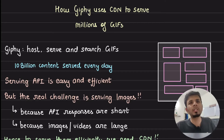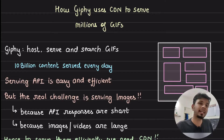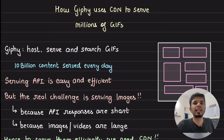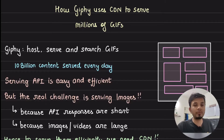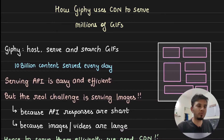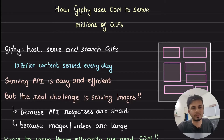Giphy is the world's most popular GIF website and it serves 10 billion media content every single day. We can totally guess it would be using some kind of CDN to do that. But is that it? In this video, we dive deep into how Giphy uses different features of CDN to solve different kinds of problems, and while going through it, we will also take a look at a very interesting internal implementation detail of a CDN.